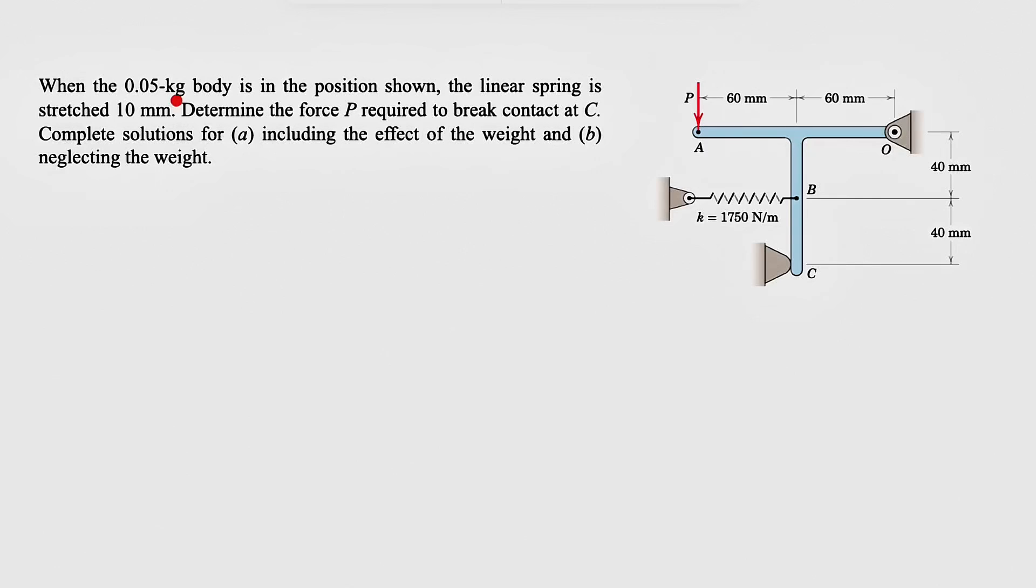Let's solve another question from the third chapter of Engineering Mechanics by Meriam. We have a 0.05 kilogram body in the position shown, with a linear spring stretched 10 millimeters, meaning it's in tension. We need to determine the force P required to break contact at point C. Complete solutions for part A including the effect of the weight, and part B neglecting the weight.